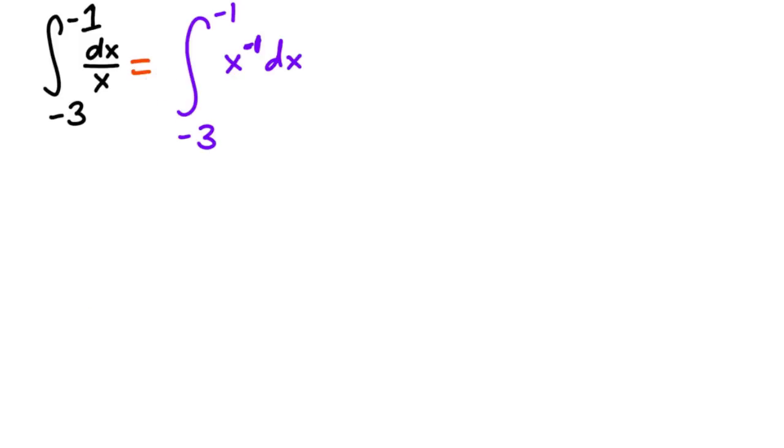But then you remember, wait a second, this dx over x is the same as 1 over x dx. And so the antiderivative of 1 over x, well that's just the natural log of the absolute value of x. And so then you're just going to evaluate from negative 3 to negative 1.